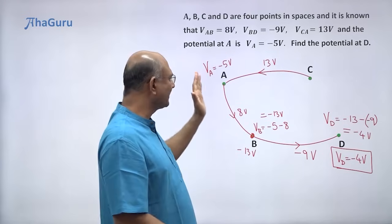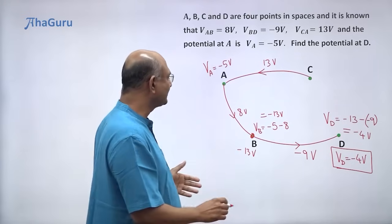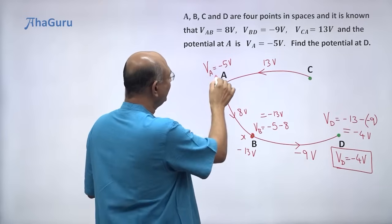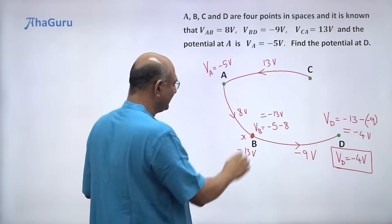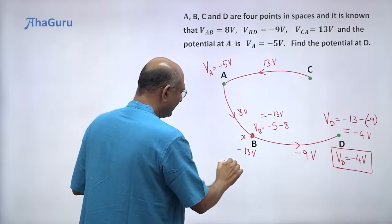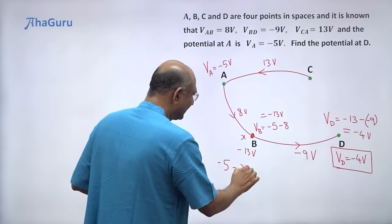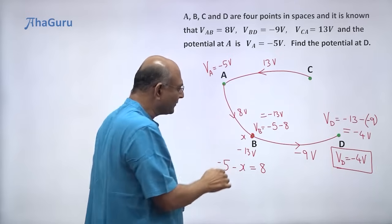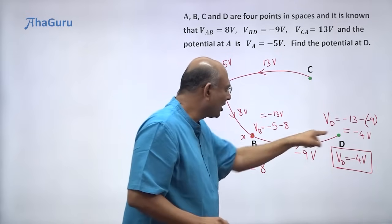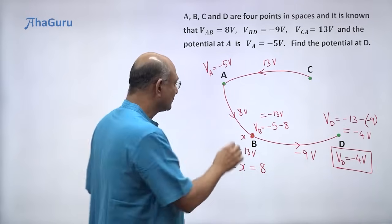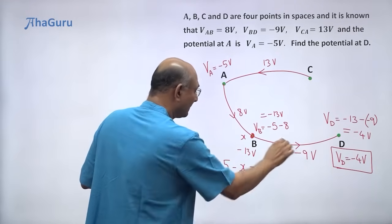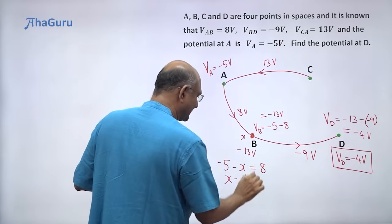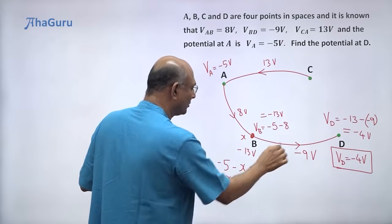We could have, of course, solved this also by writing a bunch of equations. We could have said, let B's potential be X and then we can say V_A minus V_B. So we can say minus 5 minus X is equal to 8. That will be the first equation. And then this drop is minus 9. So X minus of this potential, which I don't know, I'll call it as D, is equal to minus 9.